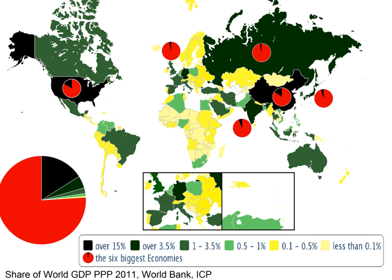World military expenditure in 2012 was estimated at $1.756 trillion. Military expenditures as a percent of GDP: roughly 2% of gross world product.